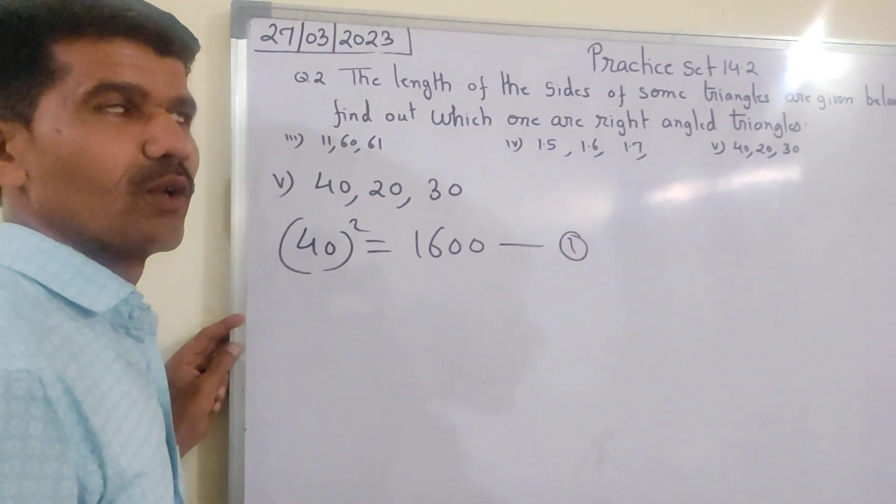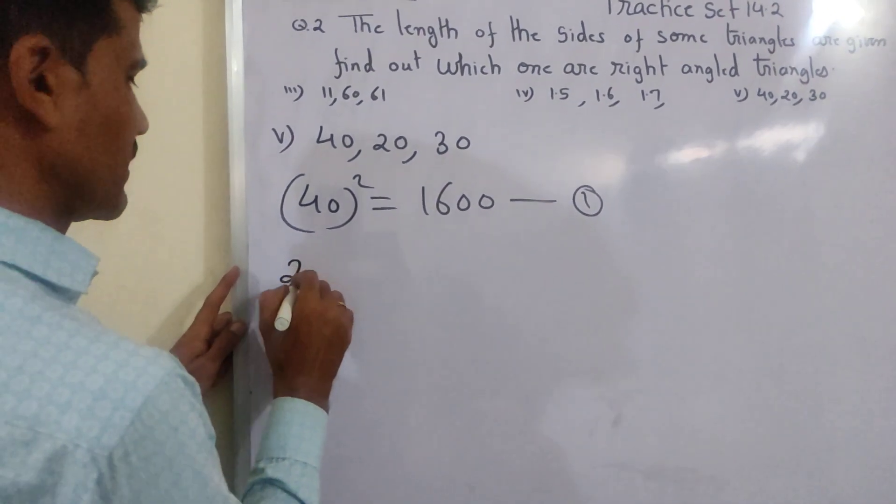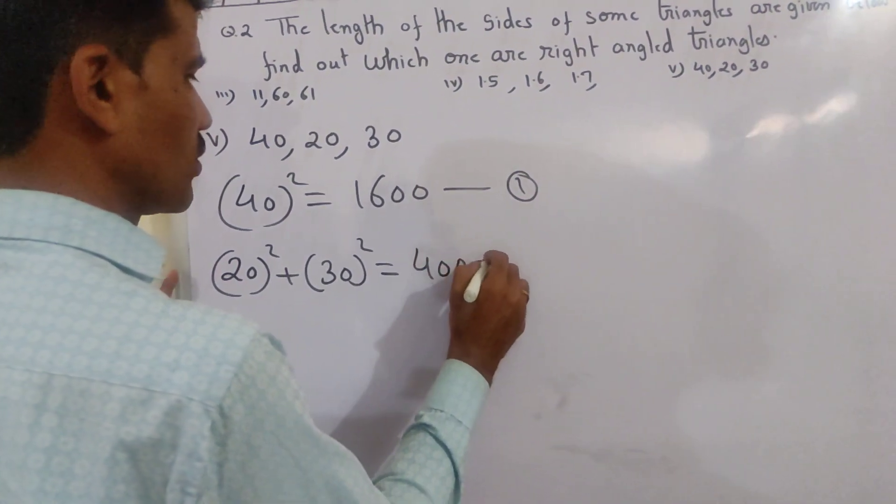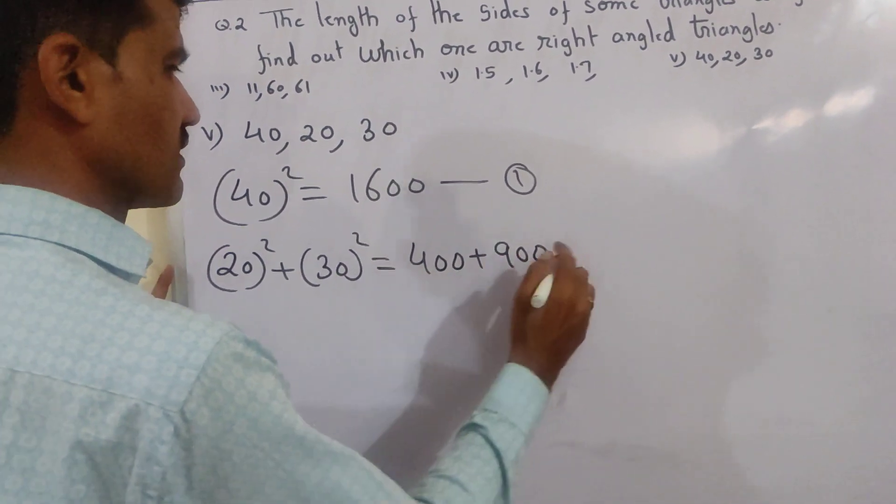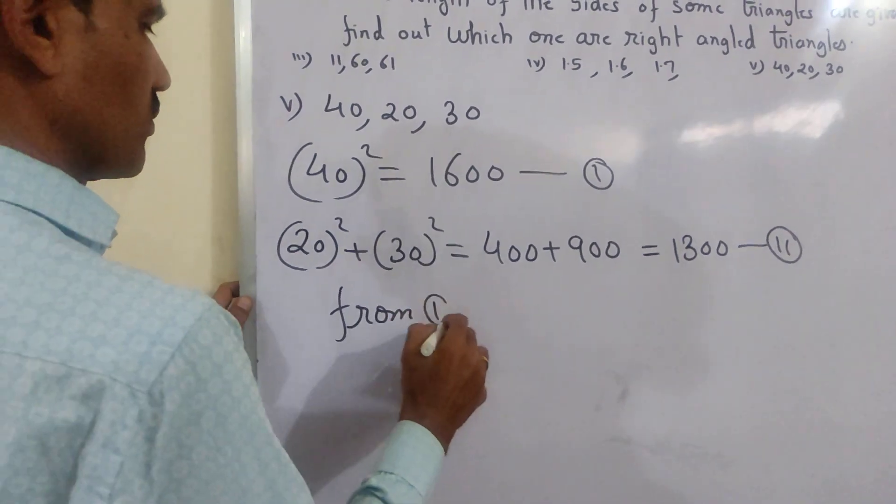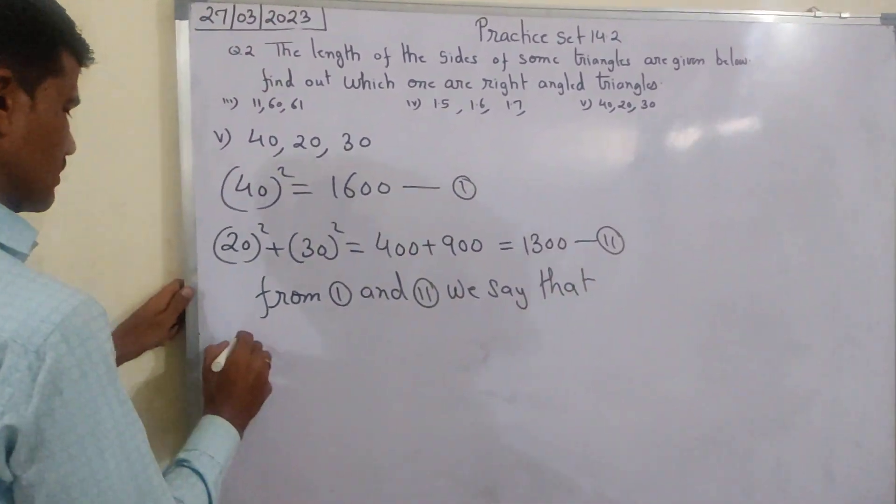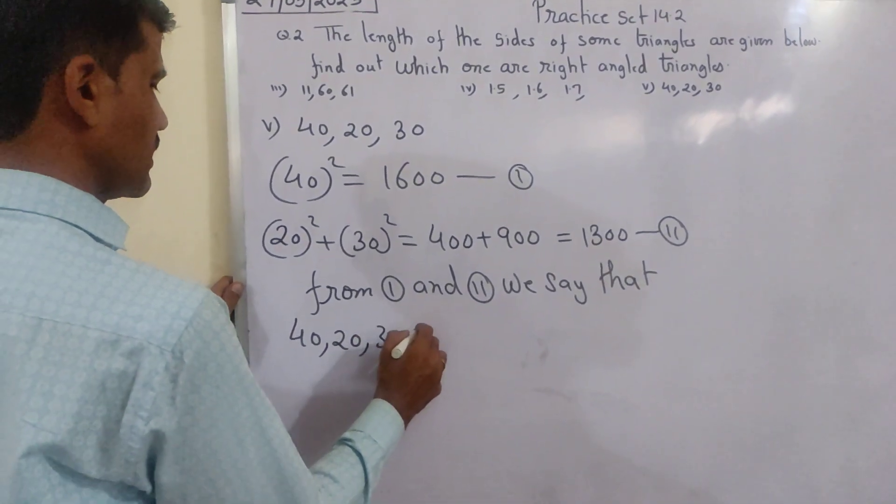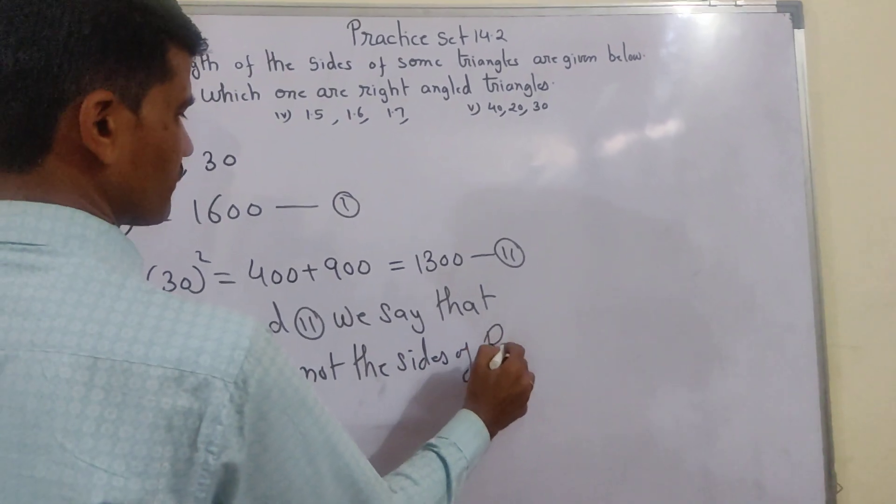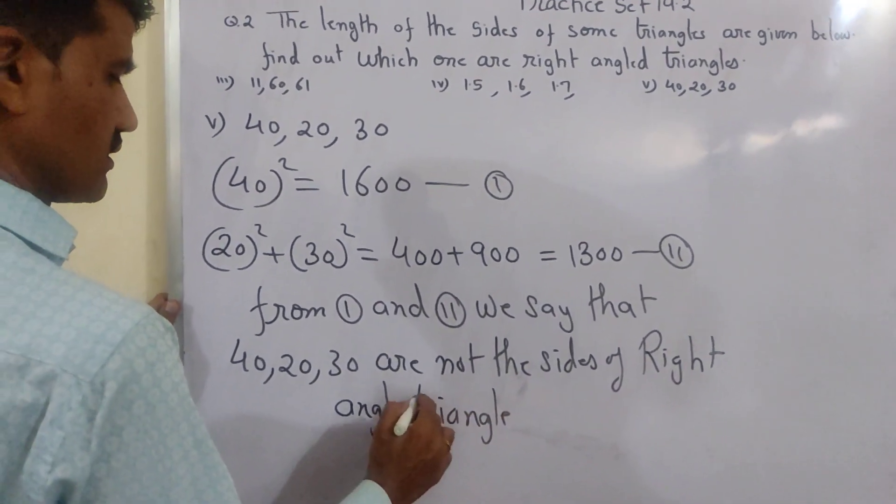Mere ko 100 ka square bhi aata hai - 100 ka square 1 ka 1 or 4 zero, 10,000. Fill - jo do choti number: 20 ka square plus 30 ka square. 20 ka square 2 ka 4, plus 3 ka 9. 400 plus 900 equals 1300. Dekha - from 1 and 2, we say that 40, 20, 30 are not the sides of right angle triangle. Close.